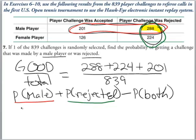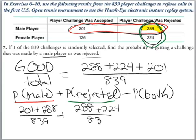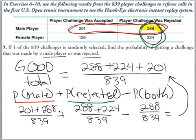So if we did probability of male, we get 201 plus 288 over 839, plus probability of rejected, 288 plus 224 over 839, minus the probability of both. There are 288 that were both, and you see we get the exact same answer doing it this way. This is just a little bit more complicated, but this does follow the formulas that you will see in the book.